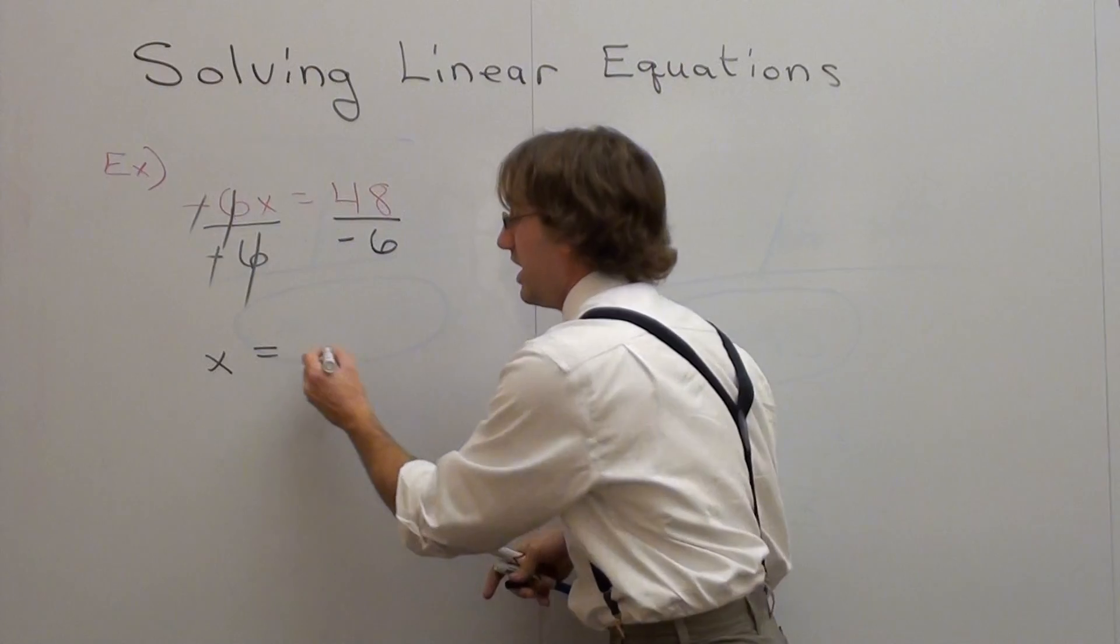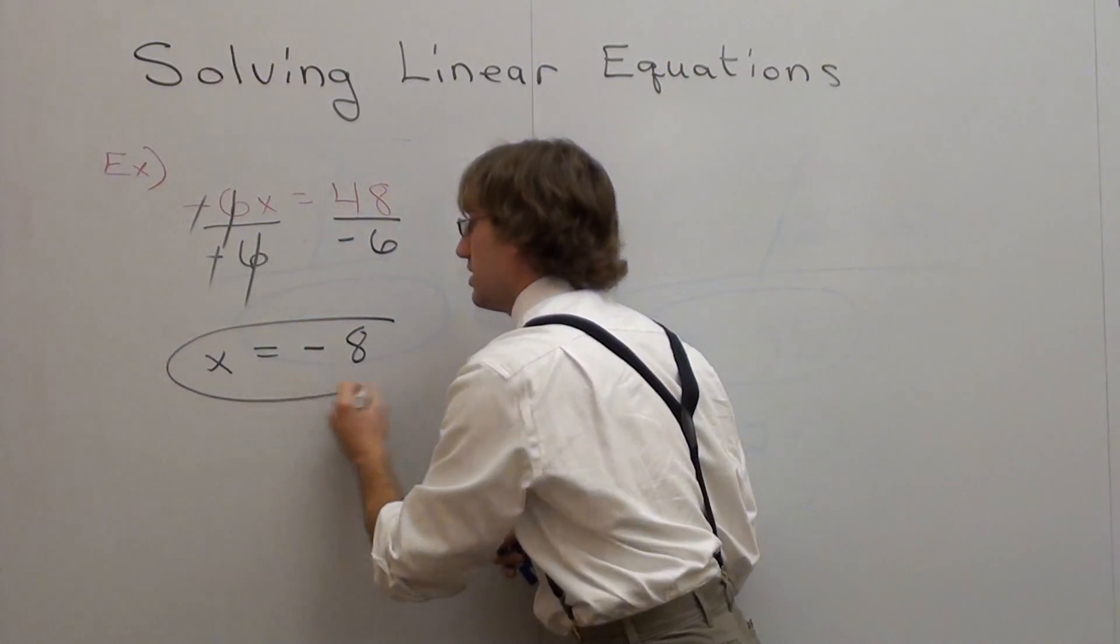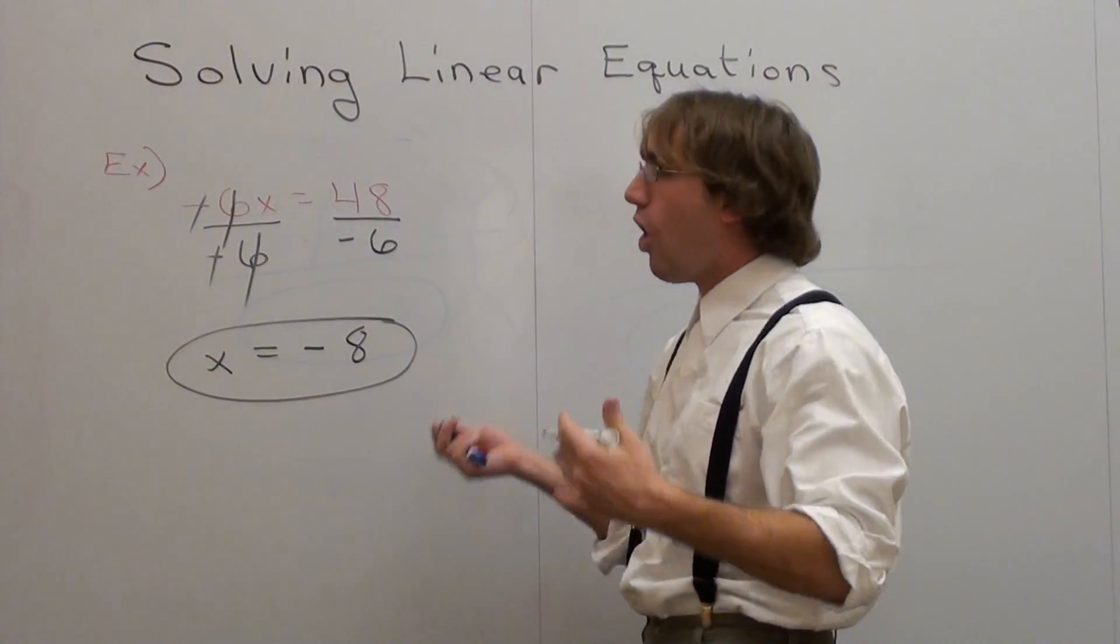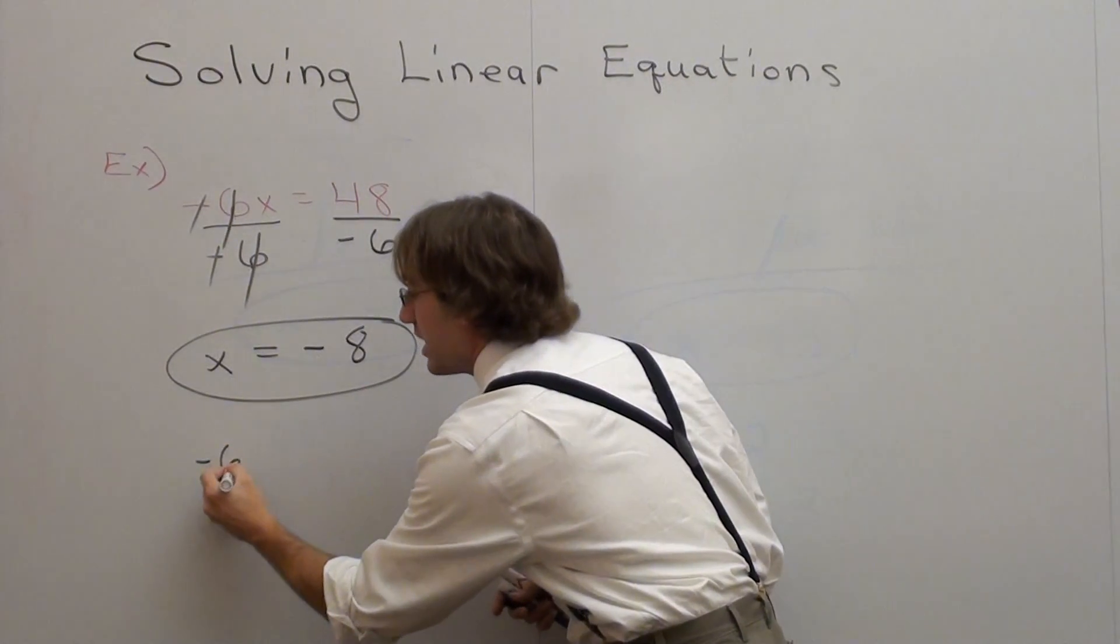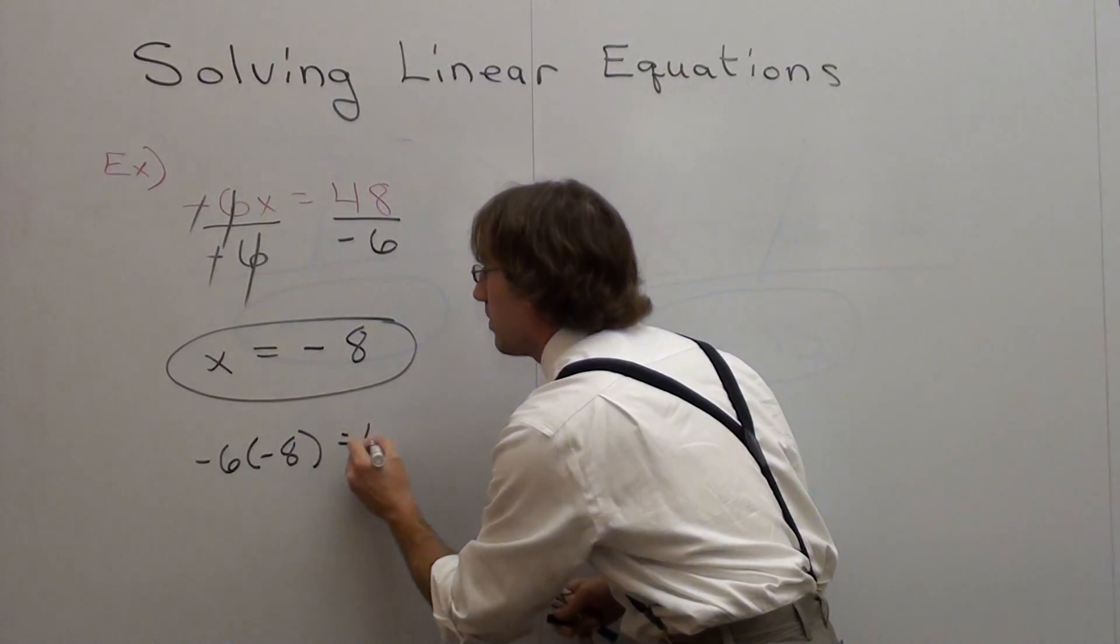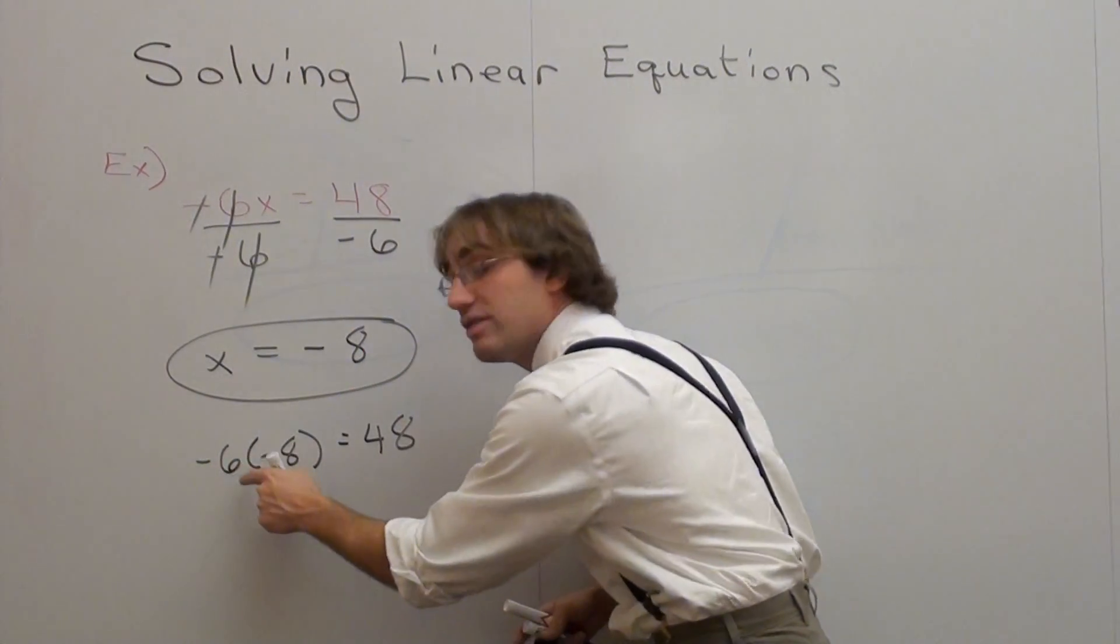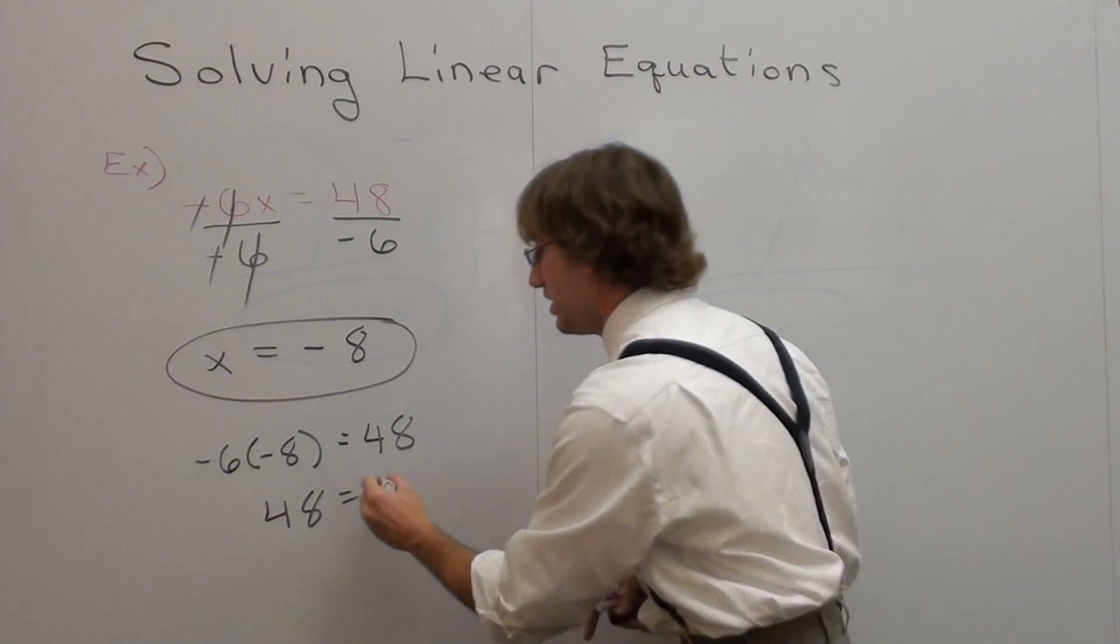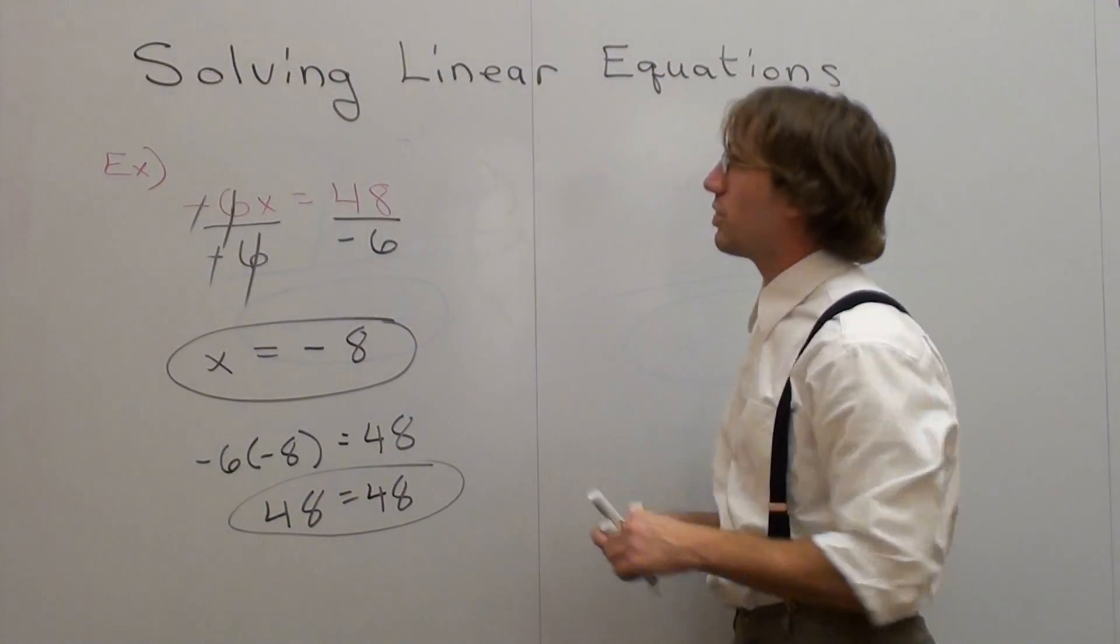Positive divided by a negative is a negative. And 48 divided by 6 is 8. That's the answer. Now, if you don't believe me, check it out. Always check if you're in doubt. Check it. See if it works. So I have negative 6 times, what was my x value? Negative 8. Does it equal 48? A negative times a negative is positive. 6 times 8 is 48. And 48 does equal 48. So that story checks out, too.